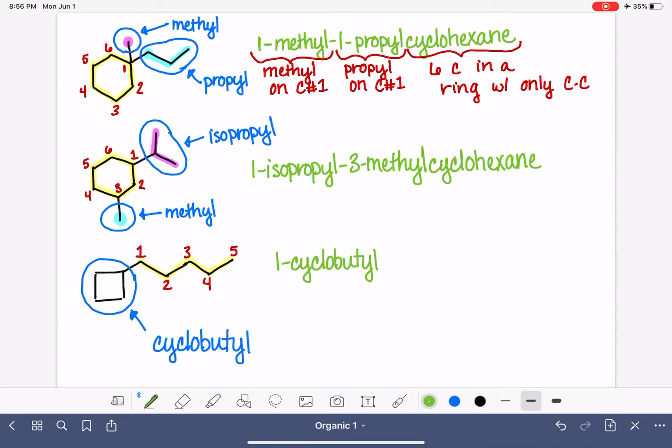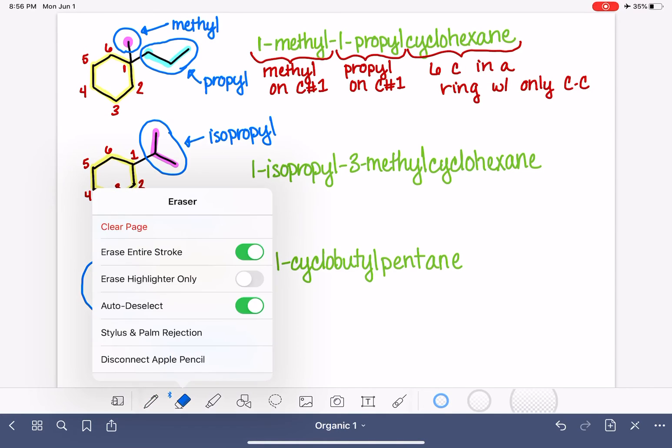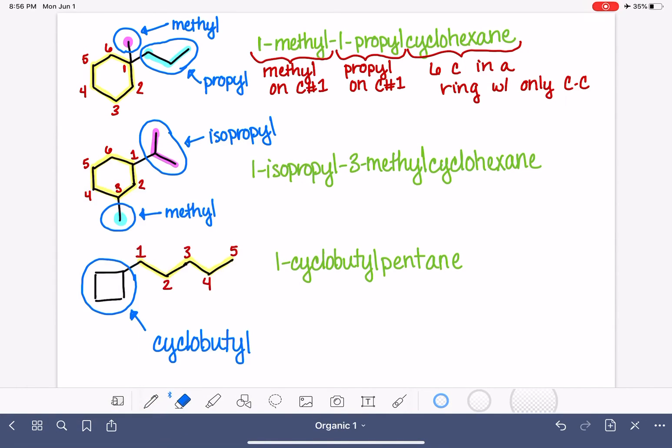Sometimes students think if there's only one substituent, like in this case, if there's only one substituent and it's on carbon number one, the one doesn't need to be there. So sometimes people want to call it cyclopentane. And you cannot do that. That's not allowed because if you don't say the location of that cyclobutyl group, how do you not know that it's located right there? It could be located right there. Or how do you not know that it is located right there?